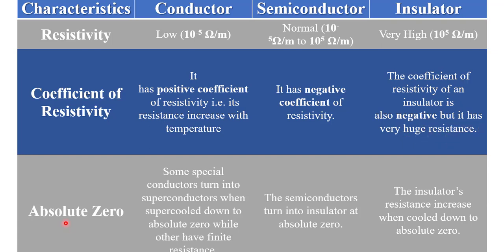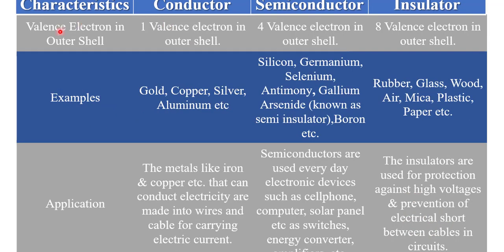At absolute zero temperature: some special conductors turn into superconductors when cooled to absolute zero, while others retain finite resistance. Semiconductors turn into insulators at absolute zero temperature. Insulators increase in resistance when cooled down to absolute zero. Regarding valence electrons in the outer shell: conductors have one valence electron in the outer shell, semiconductors have four electrons in the outer shell, and insulators have eight valence electrons in the outer shell.